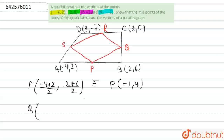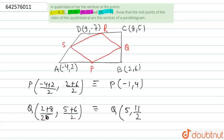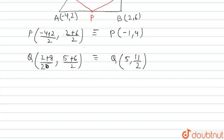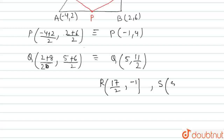Similarly, coordinates of Q will be ((2 + 8)/2, (6 + 5)/2), which gives Q as (5, 11/2). Coordinates of R will be (17/2, -1), and coordinates of S will be (5/2, -5/2).